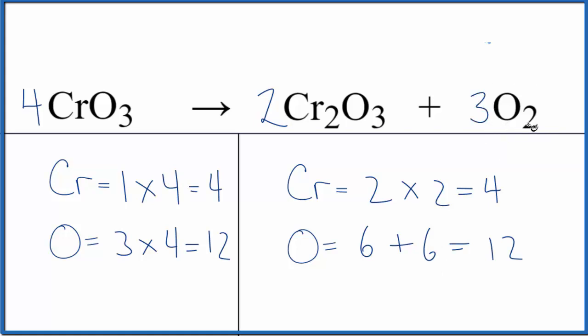So we need 6 oxygens here. And all we have to do is put a 3 here. Now we have 2 times 3, that's 6. 3 times 2, that's 6, that gives us 12. We're done.